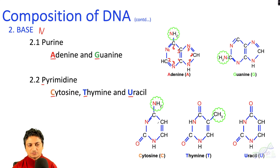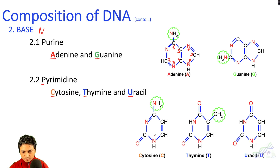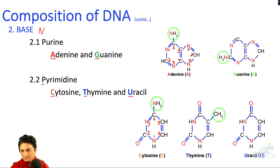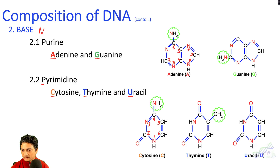For pyrimidine, the positions are numbered one through six. Cytosine has an amine group at the fourth carbon position, while thymine has an alkyl group at position five. Uracil does not have any amine or alkyl group.